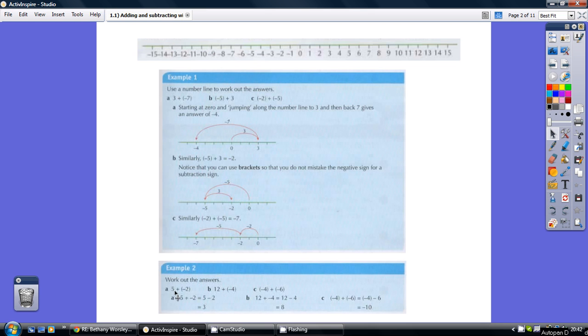Same with example 2 in part A, we're 5, and then we're adding on a minus 2. So we're starting at 5, adding on a minus 2, so going back 2, takes us to 3.